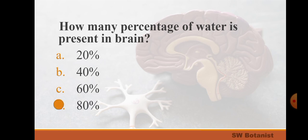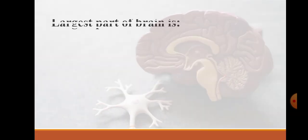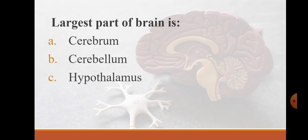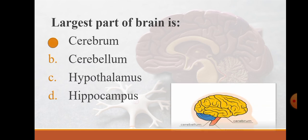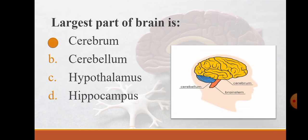Largest part of brain is cerebrum, cerebellum, hypothalamus, or hippocampus. The correct answer is cerebrum. And the smallest part of the brain is hindbrain. In this diagram there are 3 parts of brain shown and you can see that cerebrum covers largest area than other parts.